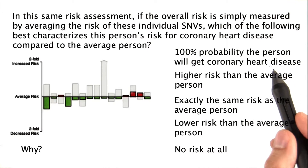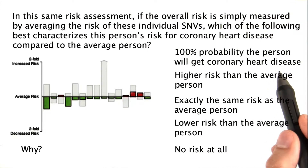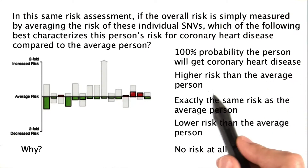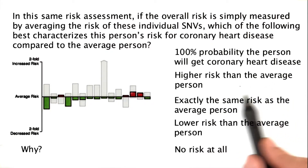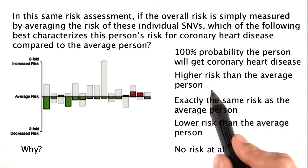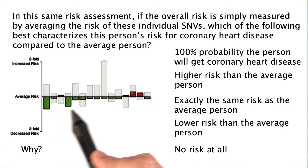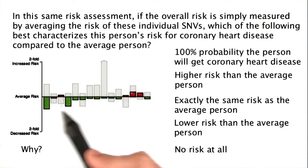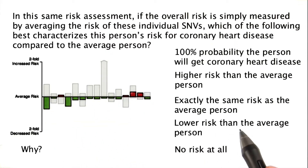100% probability the person will get coronary heart disease? No, none of this ever indicates that. What about a higher risk than average that the person will get coronary heart disease? Well, not really — we've got more green bars that stretch lower than the red bars.